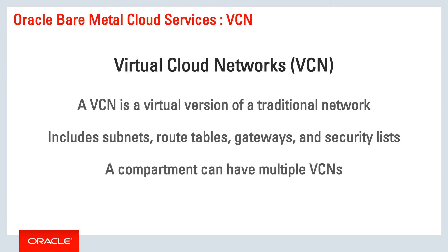Virtual cloud networks are virtual versions of a traditional on-premises network. They include subnets, route tables, gateways, firewalls, VPN devices — all of the things you would expect in a traditional network. A compartment can have multiple virtual cloud networks.